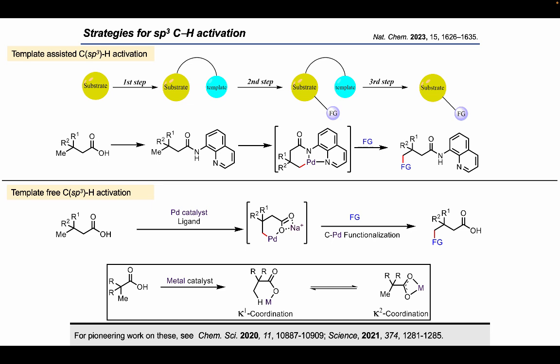For C–H activation to occur, the kappa-2 mode is considered ineffective because the metal is coordinatively saturated and is also away from the C–H bonds in the molecule. But in the kappa-1 mode, since the metal is bound to only a single oxygen, it has the chance to access other C–H bonds which it can activate. The problem is that both of these conformations are often in equilibrium, so for a C–H activation reaction to occur, we need to shift the equilibrium from the kappa-2 mode to the kappa-1 mode.